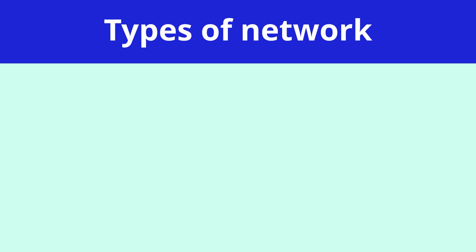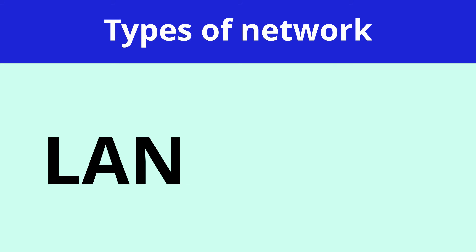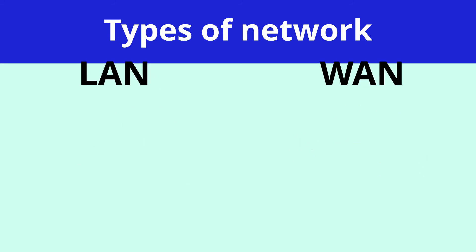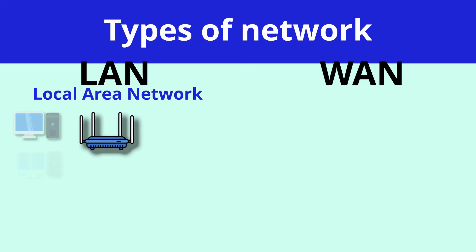We can think about networks in two different types. A network can be described as a LAN or a WAN. A LAN, which stands for local area network, is usually a single switch. There's a single switch, all of the devices connect to that single switch, and that creates a single LAN.